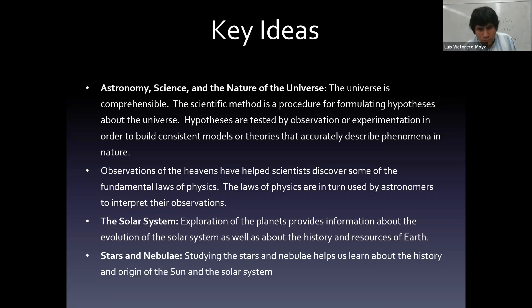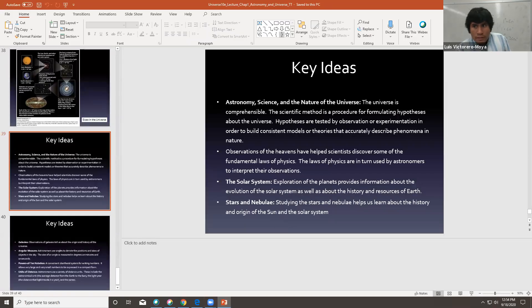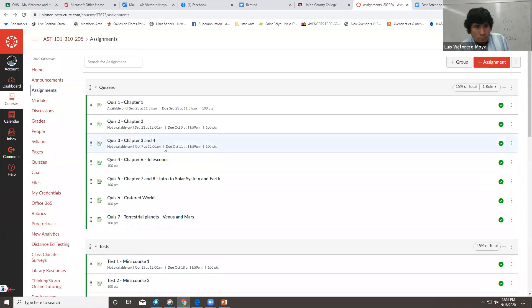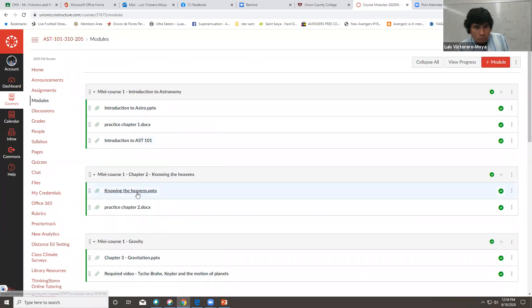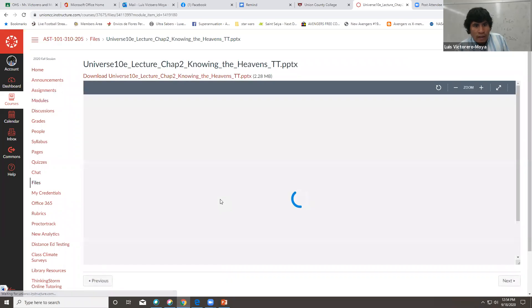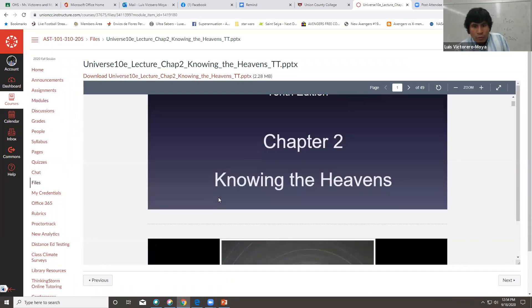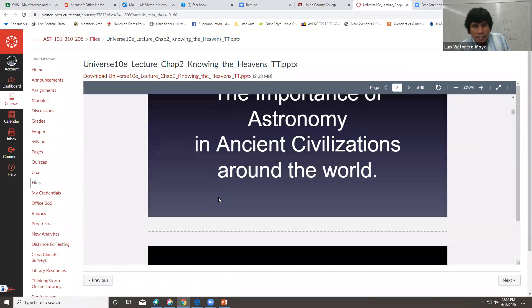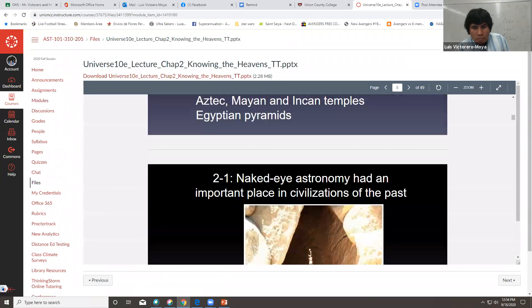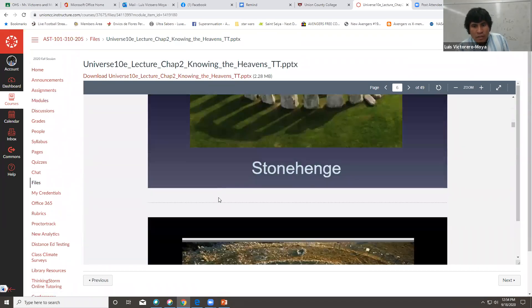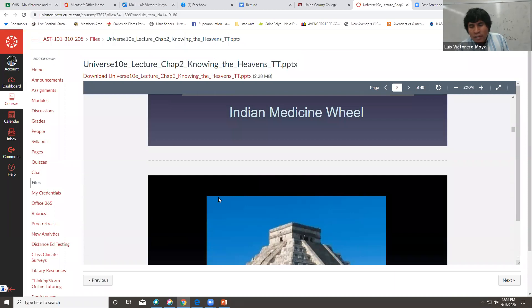So, use this video and the first video to study for chapter one. Chapter two, we'll start talking about knowing the heavens. So, here is where we're going to start talking about constellations, why astronomy is important, how we take measurements, evidences of astronomical observations in the past. Stonehenge is pretty good.